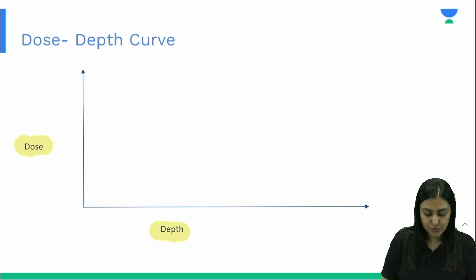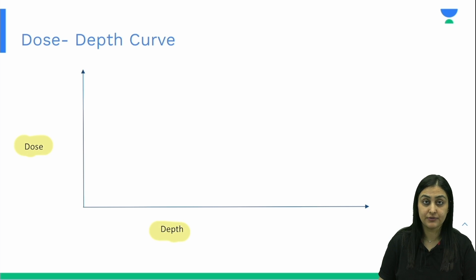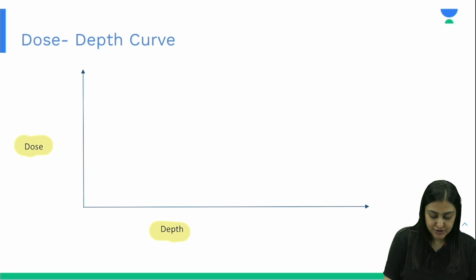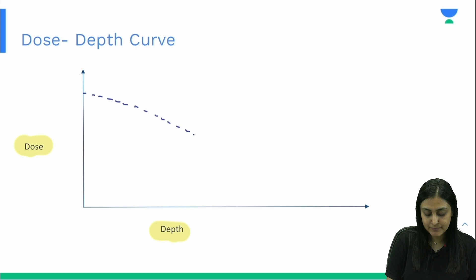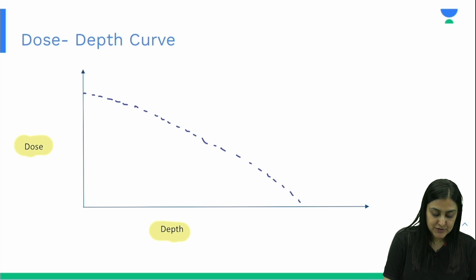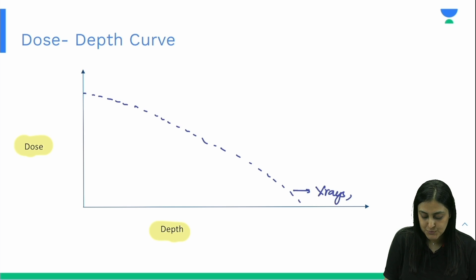The dose-depth curve shows how each agent's dose behaves as it penetrates through the body. X-rays and gamma rays behave in a predictable manner — as they go deeper into tissue they keep losing energy, continuously dissipating throughout the track.